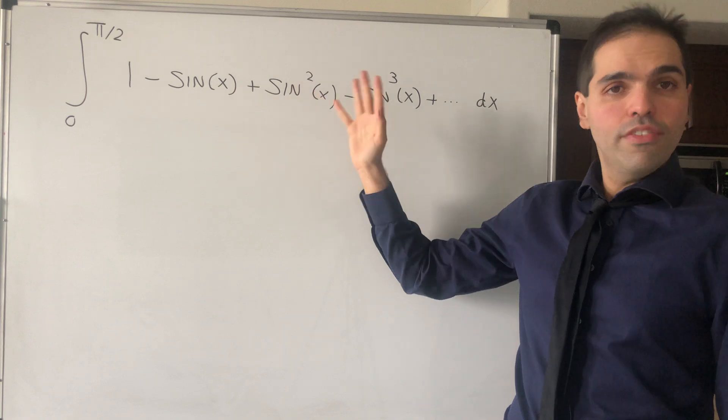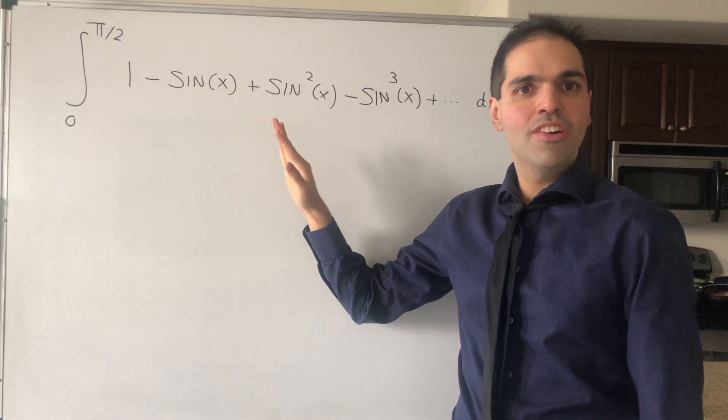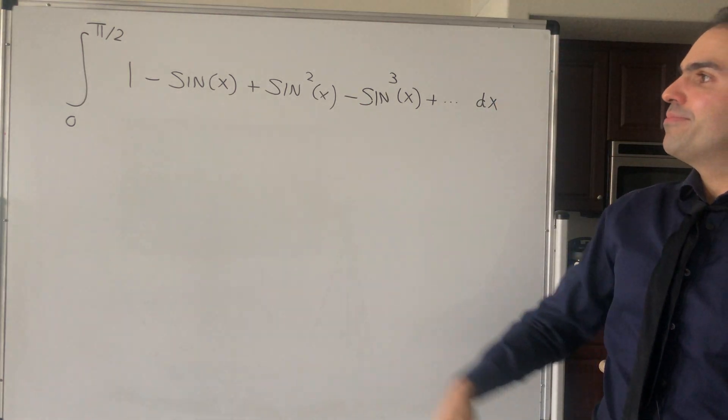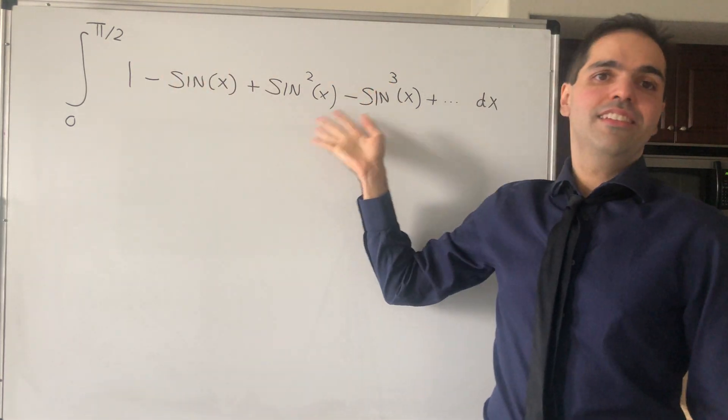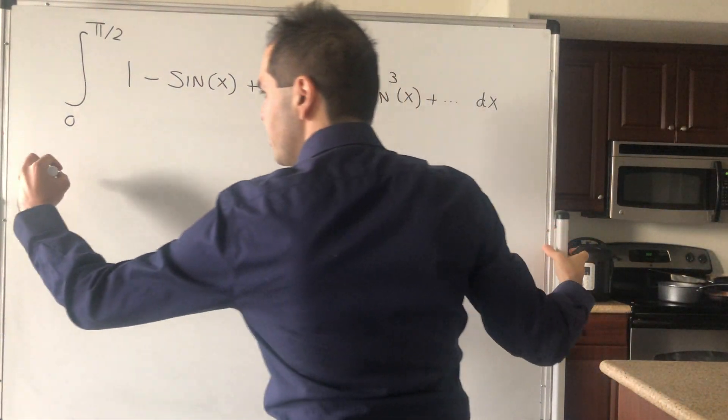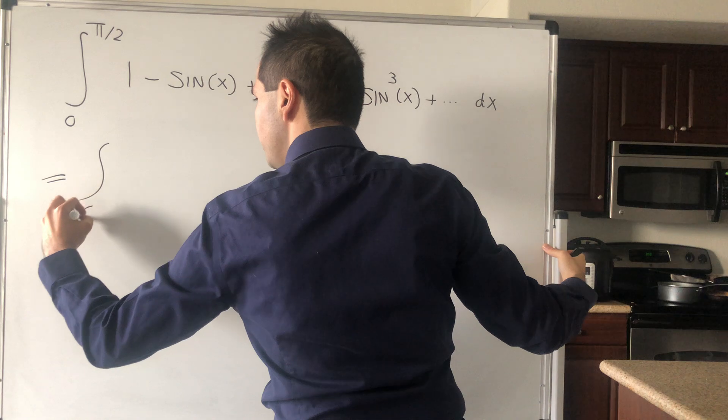And by the way, if you want to see a related video, make sure to check out the one on my channel. Now, this thing, as I said, it's an alternating series, but it turns out it's a very famous one because this integral becomes just the integral from 0 to pi over 2 of